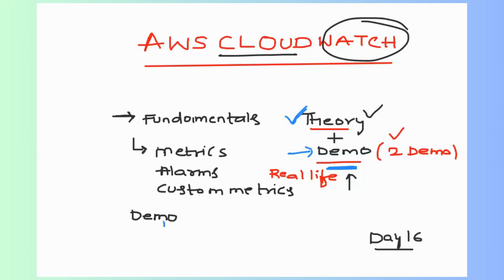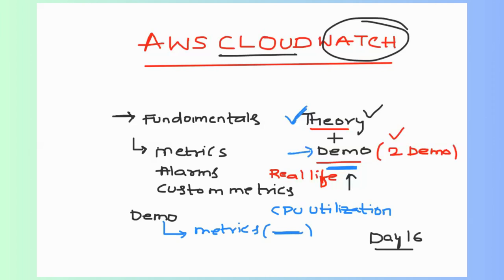The first demo will use the default metrics of AWS — I'll show how to send alarms using email, performing a demo on CPU utilization for an EC2 instance. The second demo will be on custom metrics, which is very interesting content you'll find less of online. It covers how to configure custom metrics and write applications that trigger them. This will be a lengthy video so let's get started.